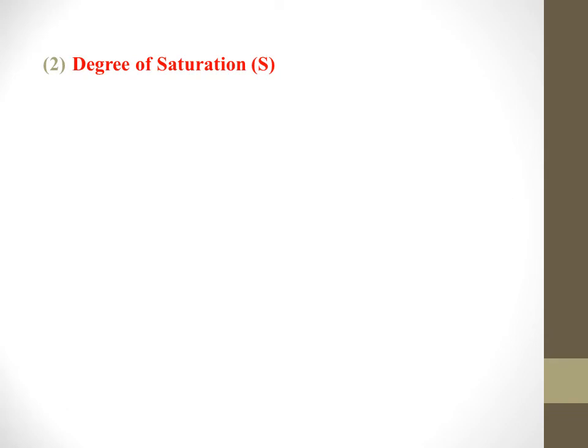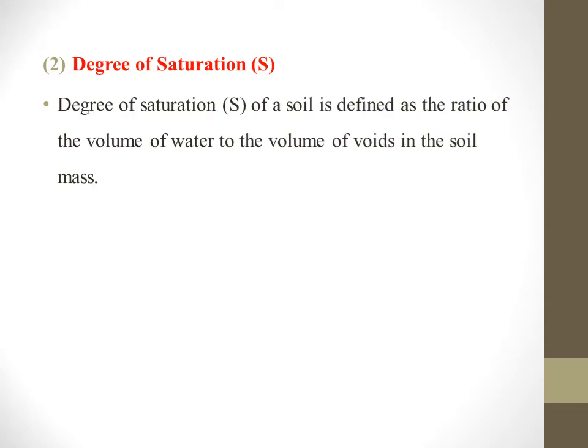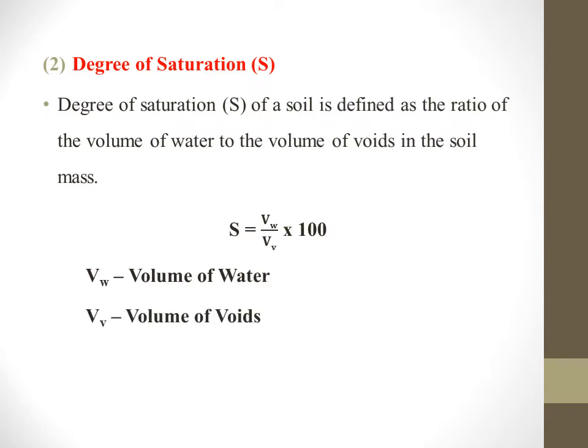The second important definition is degree of saturation, simply denoted by S. Degree of saturation of a soil is defined as the ratio of volume of water to the volume of voids in the soil mass. The phase diagram includes volume of voids plus volume of soil mass. It is denoted as S = (VW / VV) × 100, where VW is volume of water and VV is volume of voids.